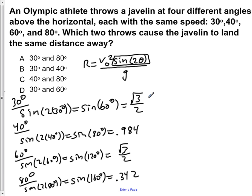So of these four, we see that the sine of 2 times 30 degrees is equal to the sine of 2 times 60 degrees.